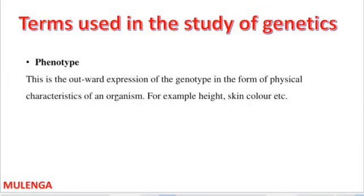Phenotype is the outward appearance of an organism, or the physical appearance of an organism. Examples include height or skin color. The outward expression of the genotype in the form of physical characteristics of an organism is called the phenotype.